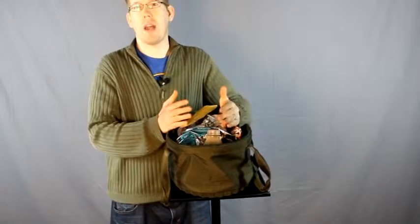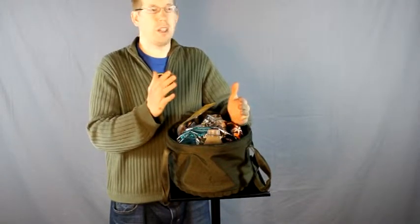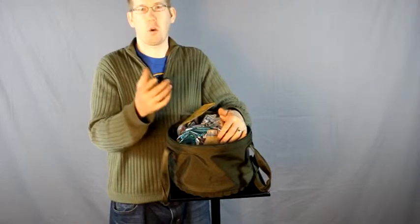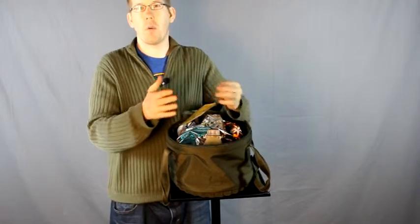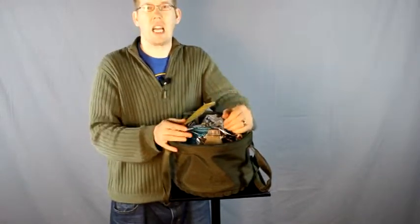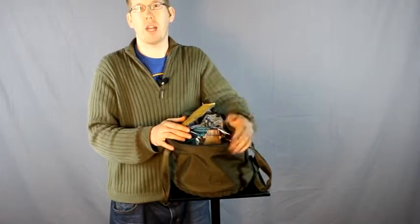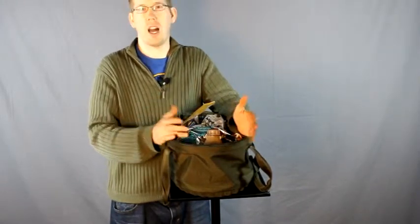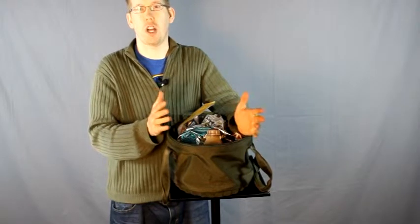If your dip baits or your Korda Goo or any of these liquid attractants you use leak in your bucket, you're fine. You just dump everything out, hose it down with a garden hose, you're good to go.